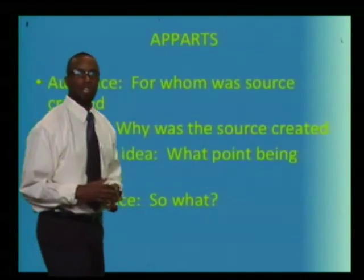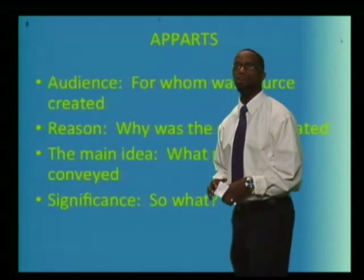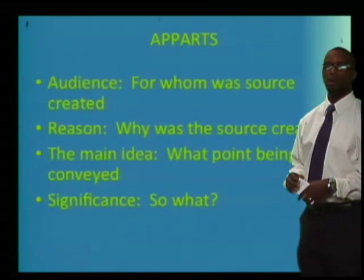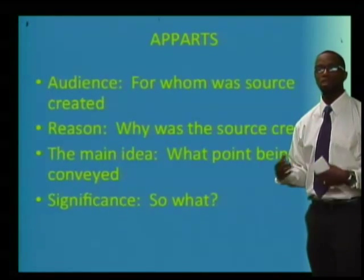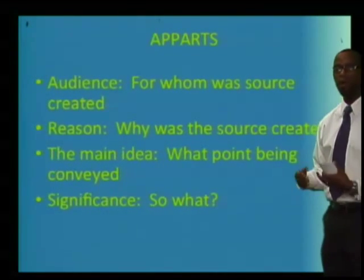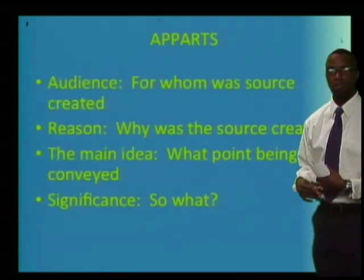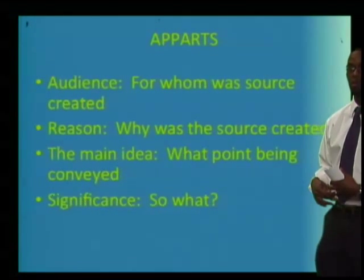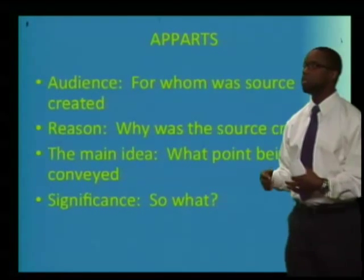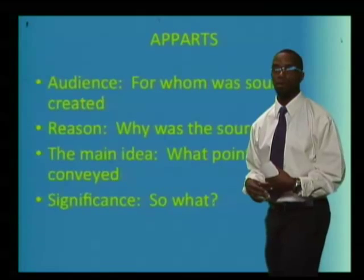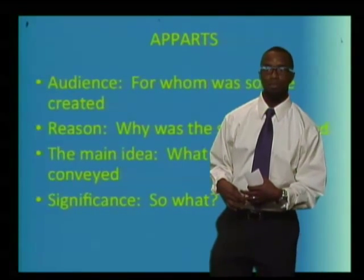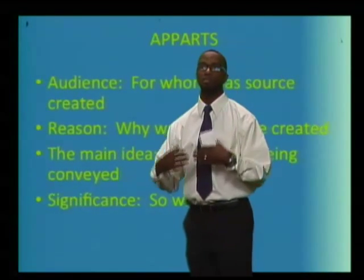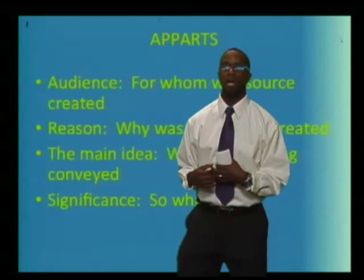P stands for place in time — where and when it was produced. The second P is for prior knowledge: beyond information about authoring context, what is the broader context of the time period? The second A is for audience — for whom was the source created? R for reason — why was the source created? T for the main idea — what's the point being conveyed? And finally, S for significance — so what? Why does this document even matter?